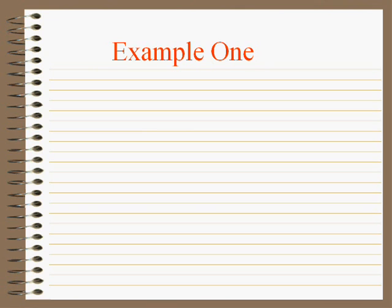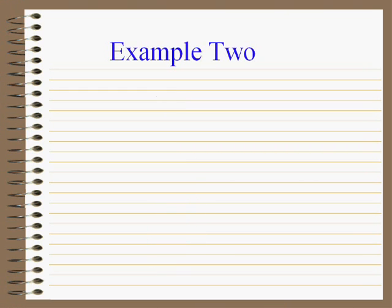Let's try some problems. It's not that bad if you just remember it means reciprocate. Six to the minus two means the reciprocal of six squared, so it's one over thirty-six. Notice with a negative exponent, we get a very small number. How about five to the negative third power? That's the reciprocal of five to the positive third, so one over five cubed is one over one hundred and twenty-five. It's not a negative number — it's a very small number.